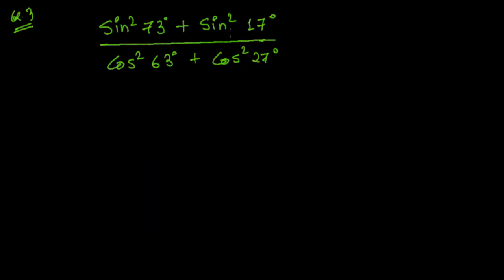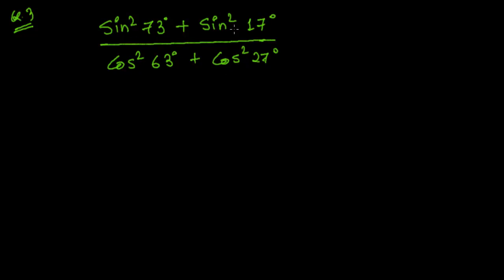Hi friends, in this video we are going to evaluate this problem. Let's think a little bit here — this is 73 and this is 17. If you add 73 and 17, the units digit gives 0, and 7 plus 1 is 8, plus 1 is 9, so it's 90. This means 73 and 17 are complementary angles.